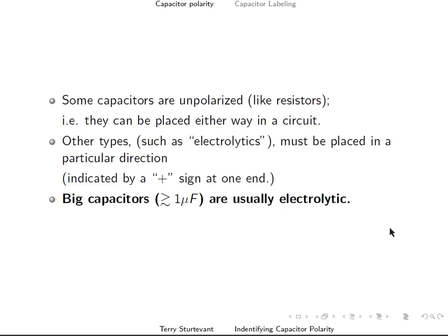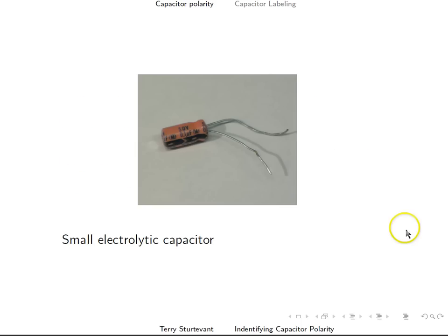Big capacitors, which means pretty much anything bigger than about a microfarad, are usually electrolytic. Here's a small electrolytic capacitor, and you can see an indication on it of the minus sign indicating which pin is the negative pin.